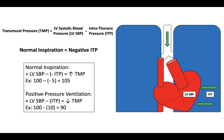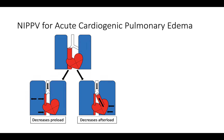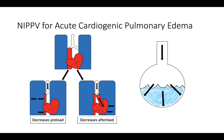A simplistic way to think about this: positive pressure provides an extra push during systole to help get blood out of the heart. Finally, positive pressure pushes fluid within the alveoli back into the interstitium where it can be cleared.